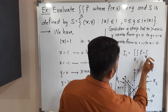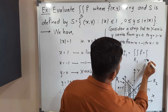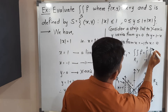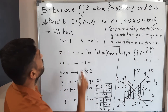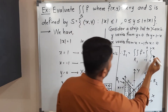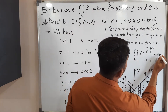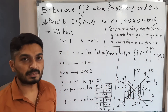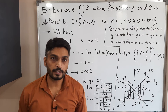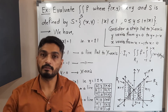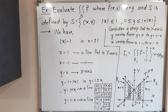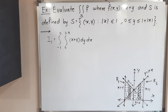So I1, the double integration of F over R1, equals the integral from minus 1 to 0 with respect to X, and from 0 to 1 minus X with respect to Y, of the function (X plus Y) dY dX. Since the strip is parallel to the Y-axis, we integrate with respect to Y first, then with respect to X.